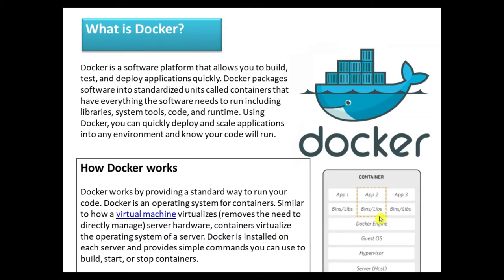This diagram represents the architecture layers: at the top is the application layer where we have applications, then binaries and libraries, below that is the Docker engine, then the guest OS, then the virtual machine layer which is the hypervisor, and finally your physical host server.